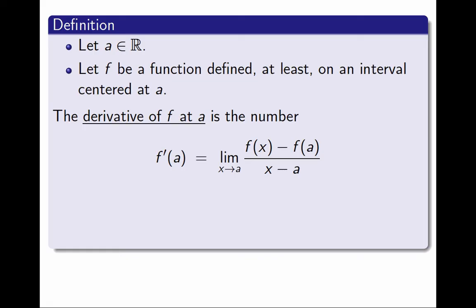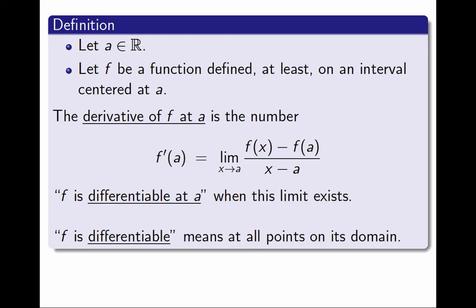Notice that this limit, like any other limit, may or may not exist. So the derivative at this point may or may not exist. I am going to say that the function f is differentiable when this limit exists. And to complete the definition, if we ever say a function f is differentiable without specifying where, it means that f is differentiable everywhere it is defined.